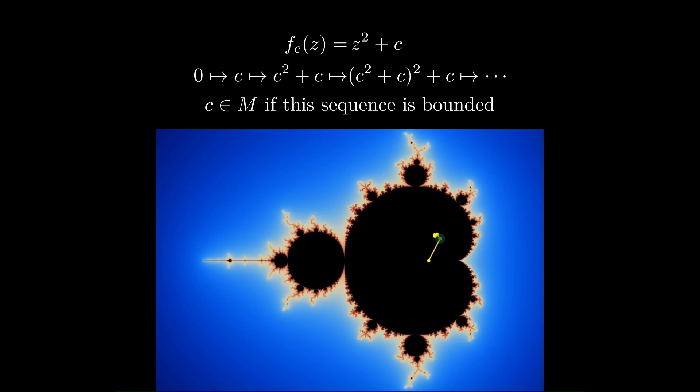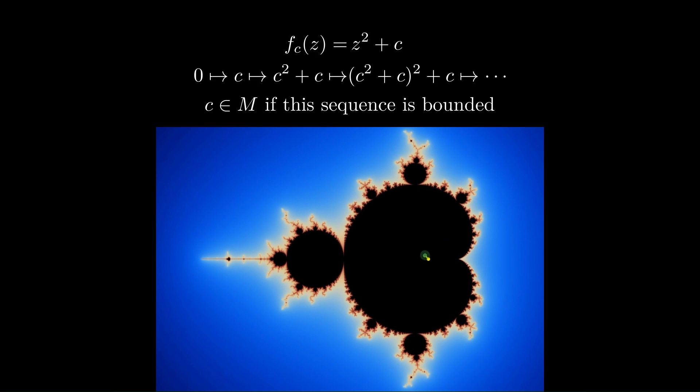Now if we approach this other circle on the edge of the cardioid, something very different happens. This time, we approach four limiting values. If we go to yet another circle, the limit point splits into five. So now the sequence bounces around between five values.